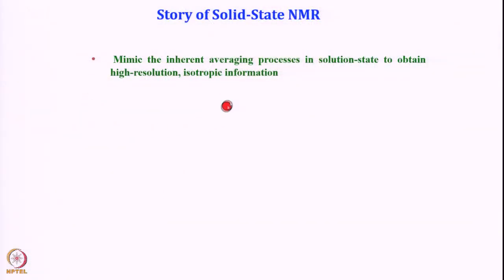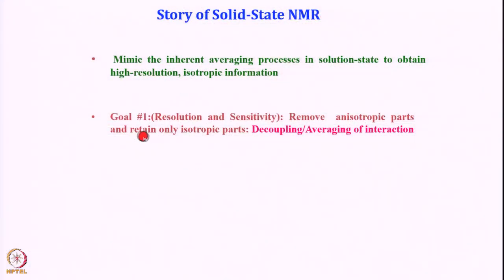Let us repeat a little bit and then move forward. In the previous class I discussed that we want to mimic the inherent averaging process that is present in solution state NMR to obtain high resolution isotropic information. If we mimic that solution state-like condition, then we can get the isotropic information. To do that, we have to enhance the resolution and sensitivity.